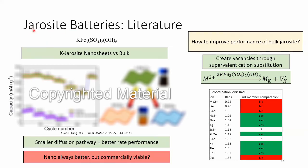The idea is: how can you take this waste product and find an economic value for it? Some research looked at using this material as a cathode for lithium-ion batteries. The chemical equation for potassium jarosite shows it's an iron sulfate hydroxide material. The material by itself as a bulk powder doesn't work very well as a battery cathode because the diffusion of lithium ions is very slow. What researchers did was make it into nanosheets — making it nano-scale improves battery performance for almost all materials because you decrease the diffusion distance for lithium ions.